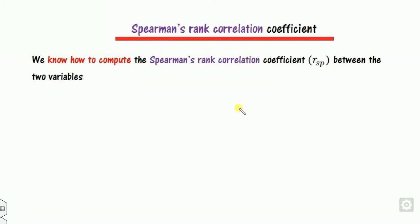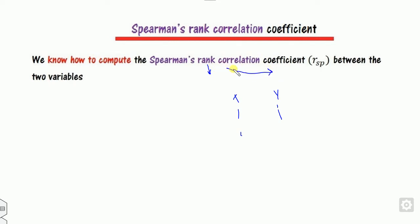So first of all, what is the rank correlation coefficient? If you have two variables x and y, you first need to rank the values of x and rank the values of y. Based on these ranks you find the correlation coefficient. This rank correlation coefficient is different from the Karl Pearson correlation coefficient.